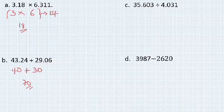We have 35.603 divided by 4.031. We are going to round off to one significant figure. Always note: always round off to one significant figure. Here is the significant figure. The next number to the significant figure is up to 5, hence we round up. We'll be having 40.